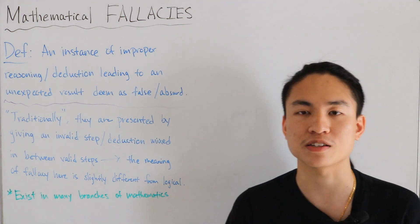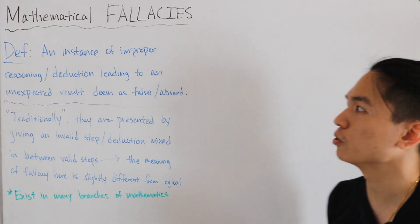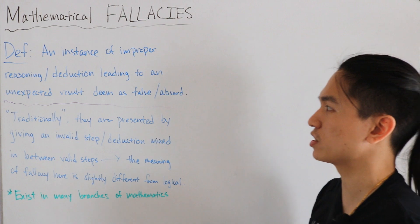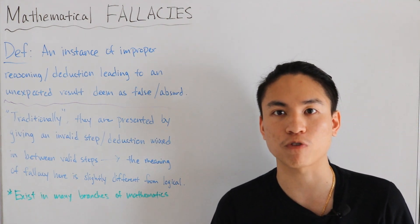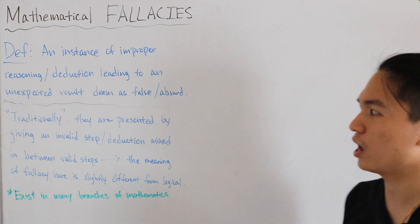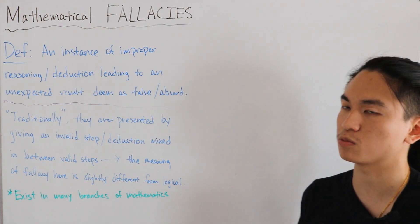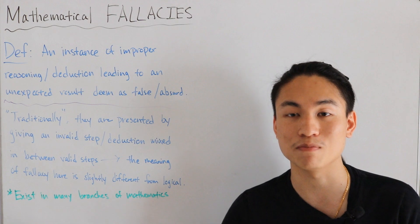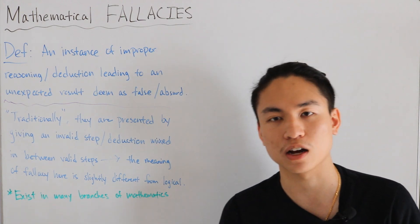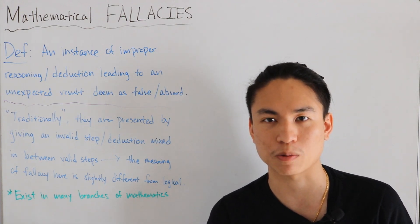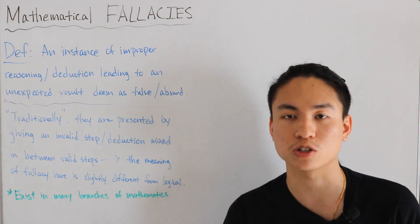What we're looking at is mathematical fallacies. To start off, what defines a math fallacy? It's an instance of improper reasoning or deduction that leads to an unexpected result that is actually false or plain absurd. Traditionally, they're presented by giving some sort of invalid step mixed in between valid steps within an argument — it's a clever form of deception or concealment. The meaning here is slightly different from a logical fallacy.